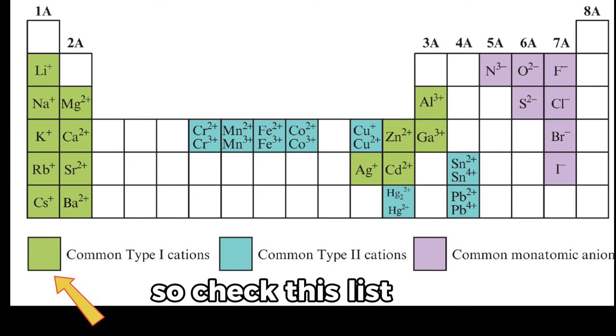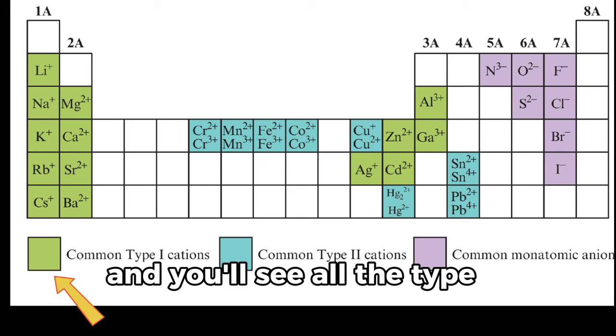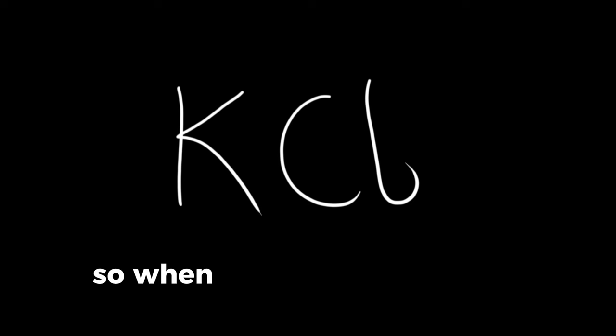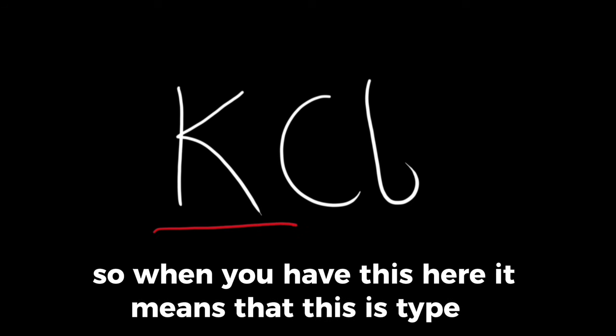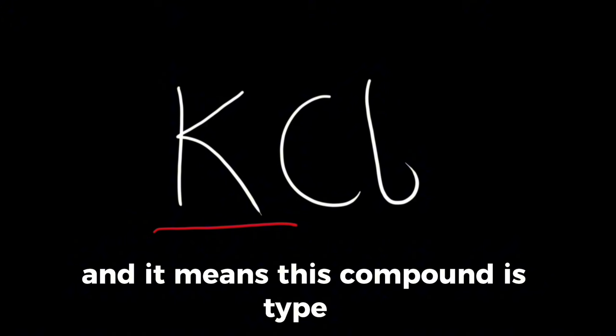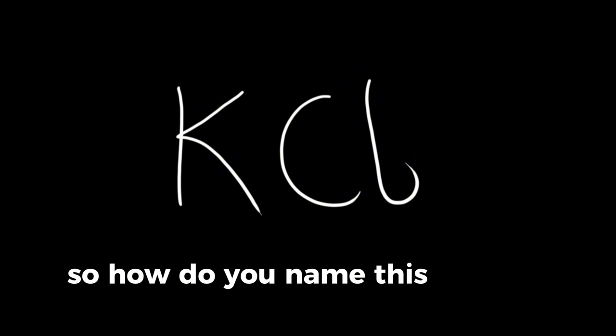Check this list here and you'll see all the type 1 cations. When you have this here, it means that this compound is type 1. So how do you name this? We'll start off by naming this. Normally, this K is called potassium.